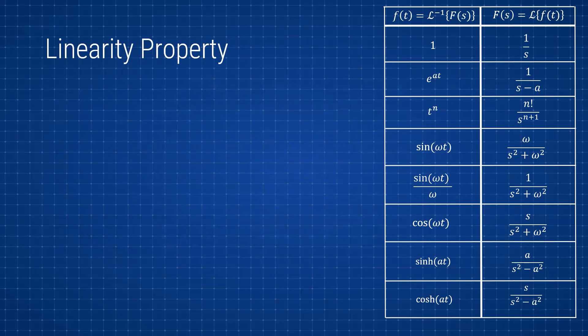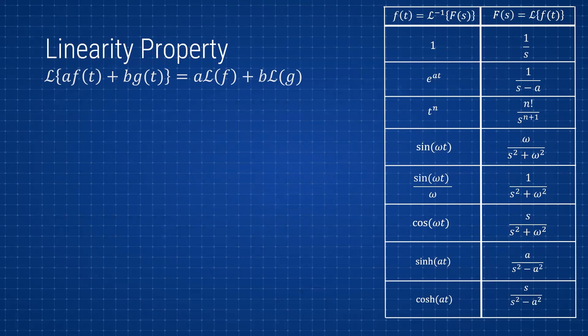One important property the Laplace transform has is the linearity property, which states that if you're taking the Laplace transform of two functions, it's the same as taking the individual Laplace transform of each function separately. Any constants or coefficients in the function can be factored out, and then you only focus on the function itself and multiply the constants back in afterward. Let's solve a couple of examples so these ideas start making more sense.